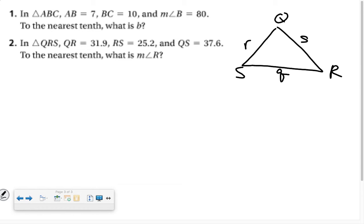Okay, so QR is 31.9, RS is 25.2, and QS is 37.6. This time, we are trying to find the measure of an angle.